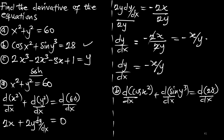Differentiating cos(x squared) with respect to x: first we differentiate the inner part, x squared, which gives 2x, and the derivative of cos is negative sin, so we get negative 2x · sin(x squared). Since it is x with respect to x, no extra dy/dx is added. For sin(y cubed): differentiating the inner part y cubed gives 3y squared, and the derivative of sin is cos, giving cos(y cubed). The derivative of the constant 28 is zero.